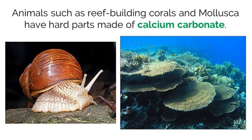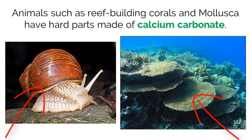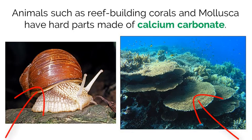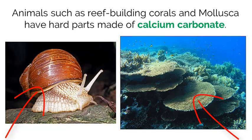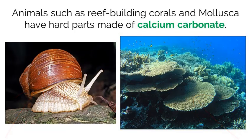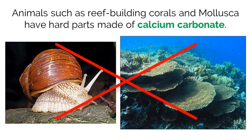As stated before, carbon exists in aquatic ecosystems and helps support life. Animals such as reef-building corals and mollusca have hard parts like shells and exoskeletons made of calcium carbonate. Without the dissolved carbon entering from the atmosphere being turned into calcium carbonate, these organisms would not be able to create the structures that they rely on for survival.